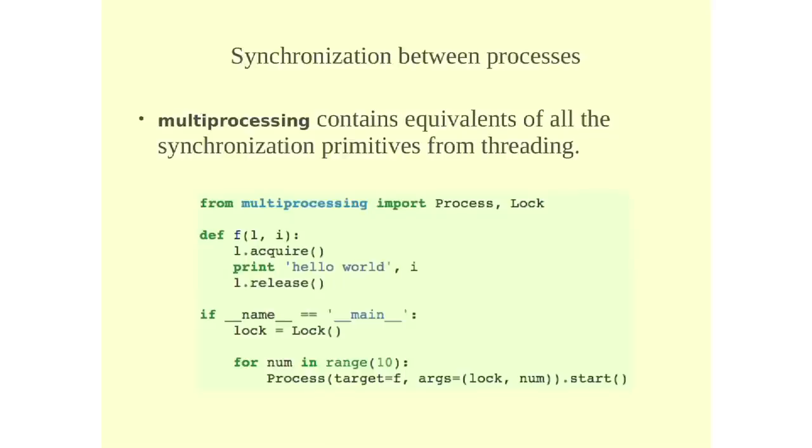And then once the function calls the acquire method of your lock, all other executing functions will stop. They cannot proceed until your function releases the lock. So that you can ensure that when you are doing the output to the standard output, no other function can do that at the same time until you release the lock.